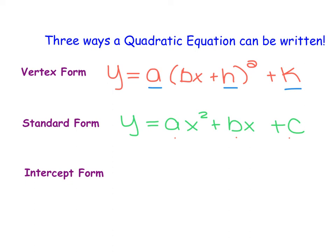And then we also have intercept form, which is y = a(x + p)(x + q) in parentheses.